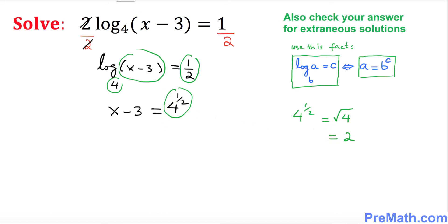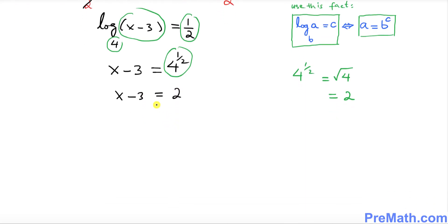So I can write on the right hand side this as 2 and we have x minus 3 on the left hand side. We want to solve for x. So I want you to add 3 on both sides. So we are pretty much done. So this 3 and negative 3 gone. x equals to 5 is our solution.